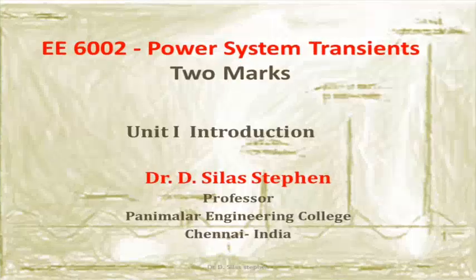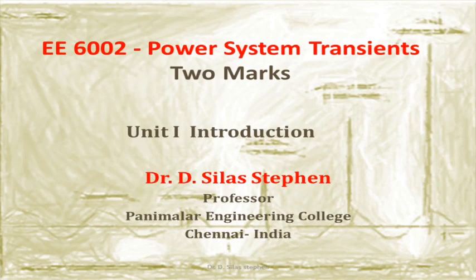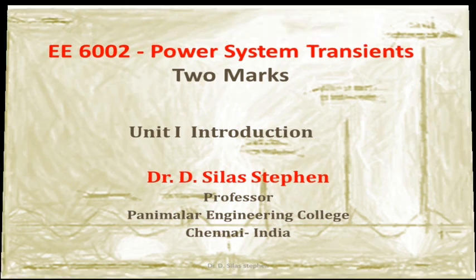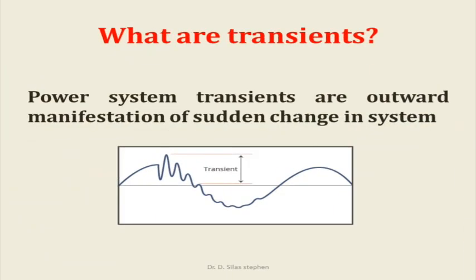Here we are going to learn the two marks of unit 1 of power system transients. What are transients? Power system transients are outward manifestations of sudden change in system.